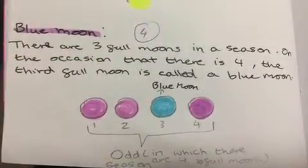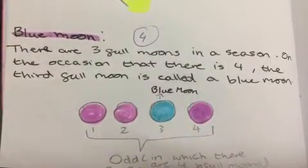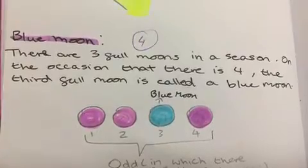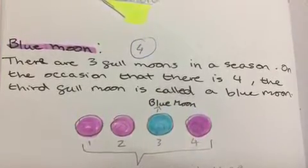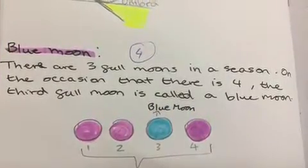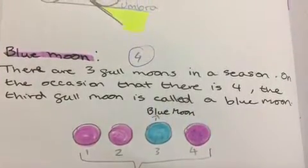There are three full moons in a season. On the occasion that there are four, the third full moon is called a blue moon.